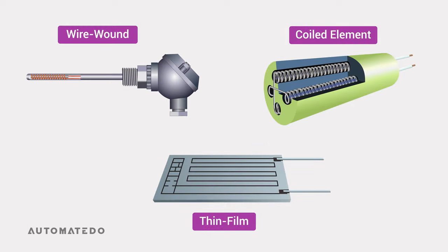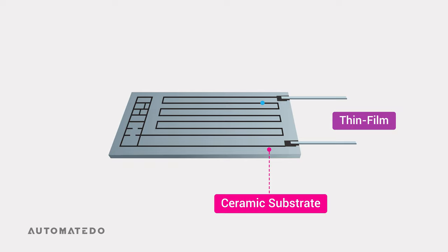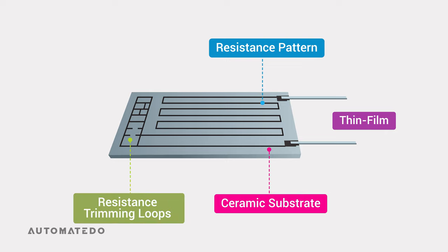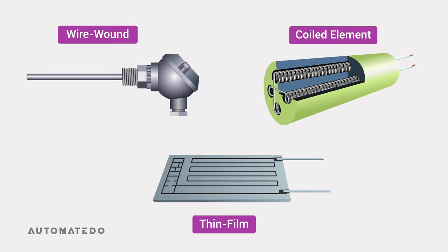The thin film type consists of a thin layer of platinum deposited onto a ceramic substrate in a common form of resistance pattern. The manufacturers use a precision laser to trim the sensor element by opening a parallel shunt in the pathway, achieving the desired nominal resistance at zero degrees Celsius. Also, a glass coating is applied to the sensing wire and the ceramic substrate as a protector.